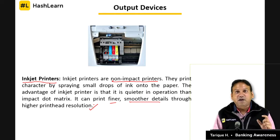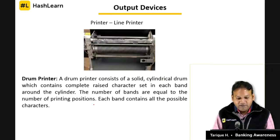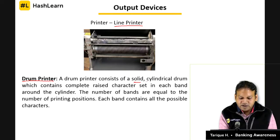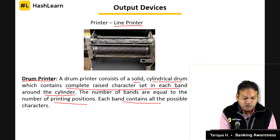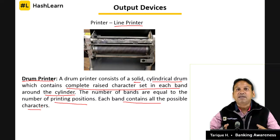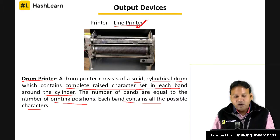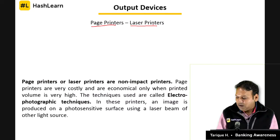If you need something faster than a character printer, we have the line printer, which prints one line at a time. An example is the drum printer, which uses a solid cylindrical drum with raised character sets on each band — mostly used in newspaper presses and bulk printing. In offices, the common choice is the laser printer, which is a page printer — it prints one full page at a time.